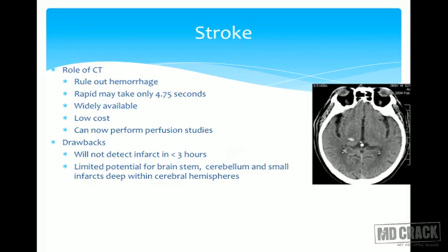The role of CT in stroke: it rules out hemorrhage, is quite fast — taking as little as 4.75 seconds — is widely available, low cost, and can perform perfusion studies. Drawbacks include that CT will not detect an infarct less than three hours old, and has limited potential for detecting brainstem, cerebellar, and small infarcts deep within the cerebral hemispheres.